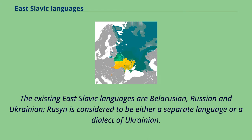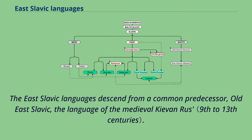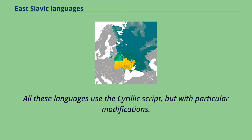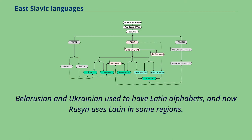Rusin is considered to be either a separate language or a dialect of Ukrainian. The East Slavic languages descend from a common predecessor, Old East Slavic, the language of the medieval Kievan Rus. All these languages use the Cyrillic script, but with particular modifications. Belarusian and Ukrainian used to have Latin alphabets, and now Rusin uses Latin in some regions.